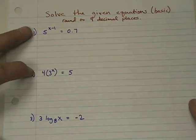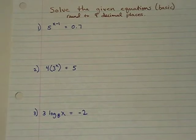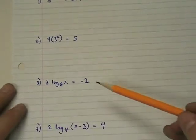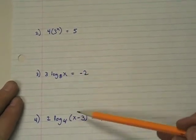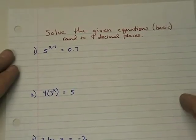The first two are exponential equations. That means that the variable is an exponent. So here x is an exponent, here x is an exponent. And here these two are logarithmic equations and we're asked to solve these and round our answers to four decimal places.